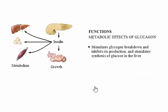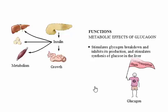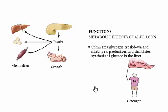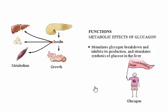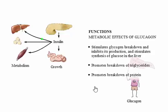To understand the control of metabolic processes during both the absorptive state and the post-absorptive state, we need to examine the functions of another hormone — glucagon, an insulin antagonist. Glucagon drives the catabolic activity of the post-absorptive period in response to declining plasma glucose. Glucagon stimulates glycogen breakdown, inhibits its production, and stimulates glucose synthesis in the liver — all of these actions increase plasma glucose levels. Glucagon also promotes the breakdown of triglycerides and the degradation of proteins.